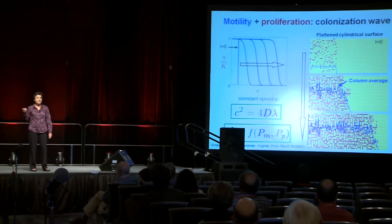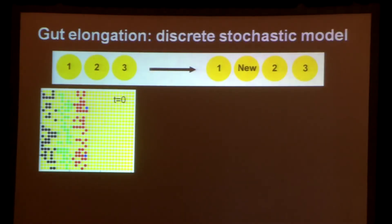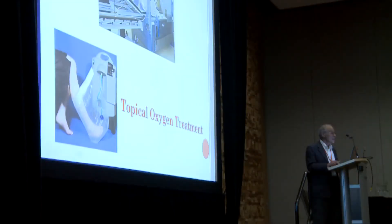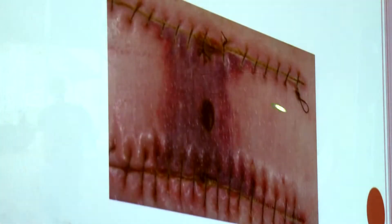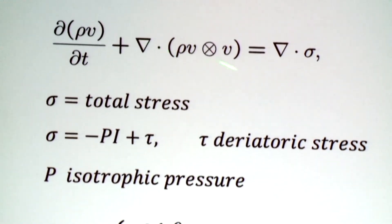In an experiment you can't manipulate things as easily, whereas in a model you can play around with parameters and rules, which allows you to experiment and explain experimental data. The primary goal of this particular project is to see how to use oxygen treatment more effectively. Without oxygen, wounds will not heal, but too much oxygen can also be bad for the patient because it's toxic, and the question is how to balance it.